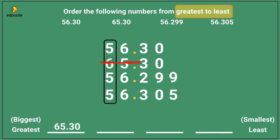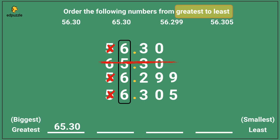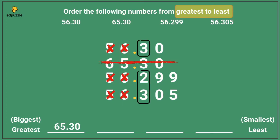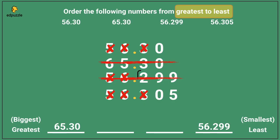I'll add 65.30 to my list and cross off that entire number. All of the rest of the digits are 5, so I'll cross them out and move to the next place value. In the 1s place, all of the digits are 6s — because all the digits are the same, I will cross them out and move over. Now, looking at all of these digits, I can see a 3, a 2, and a 3. 2 is different and it's smaller than the 3s, so 56.299 must be smaller than the others. I will add it to my list on the least side and cross it off.